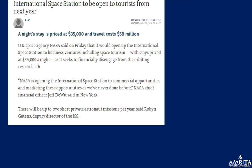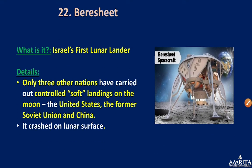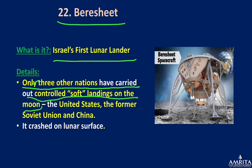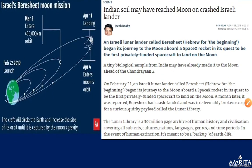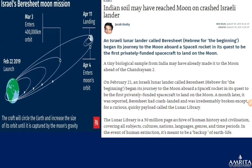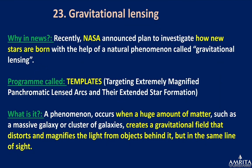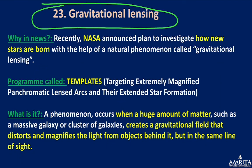Beresheet is Israel's first lunar lander. Only three other nations have successfully carried out a controlled soft landing on the Moon — China, the USSR, and the USA. India's Chandrayaan-2 attempted a soft landing but failed. Beresheet also crashed on the lunar surface.